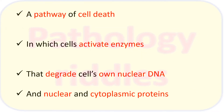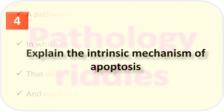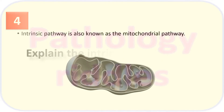To define apoptosis: apoptosis is a programmed or timed cell death. The cell itself activates enzymes which degrade the cell's own DNA and nuclear and cytoplasmic proteins. The intrinsic mechanism of apoptosis — the intrinsic pathway — is also known as the mitochondrial pathway.